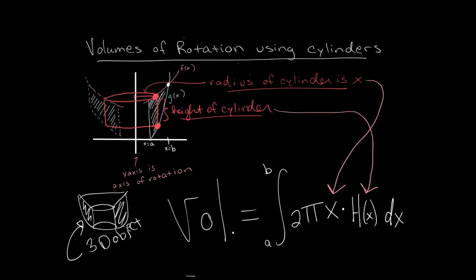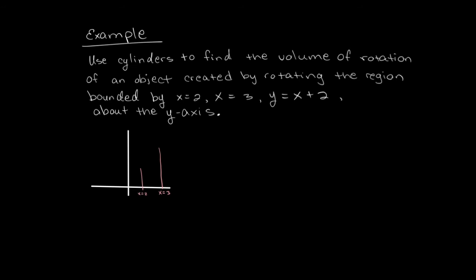It's better if we can just demonstrate by doing some examples. Okay, here's our problem: we're gonna find the volume which is created by rotating the region bounded by x equals 2, x equals 3, and y equals x plus 2 around the y-axis. Here are the three lines and we're taking this region and rotating around the y-axis. So let's go ahead and draw the mirror image.